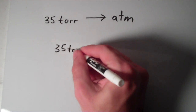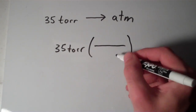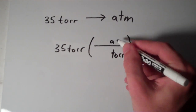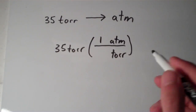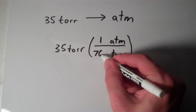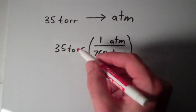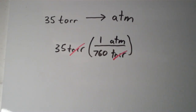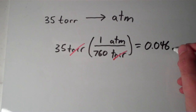Again, I start out with 35 Torr and set up a conversion factor. This time Torr is still going to be on the bottom and ATM — atmospheres — is going to be on top; that's the unit we want. Recall that for every one atmosphere, one atmosphere is equal to 760 Torr. Those are the two equivalent quantities we're using. Our Torr cancels out and we are left with atmospheres, giving you around 0.046 atmospheres.